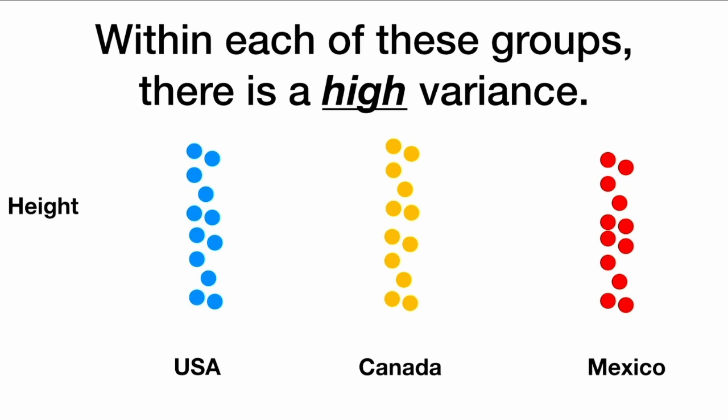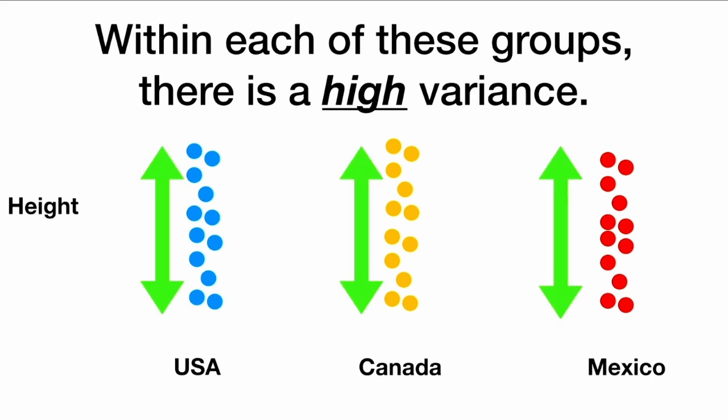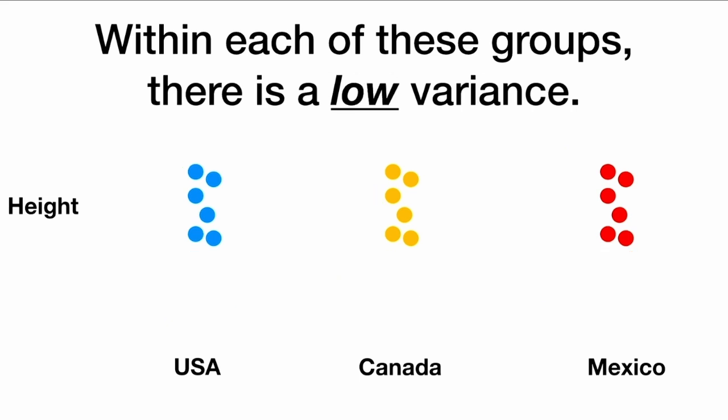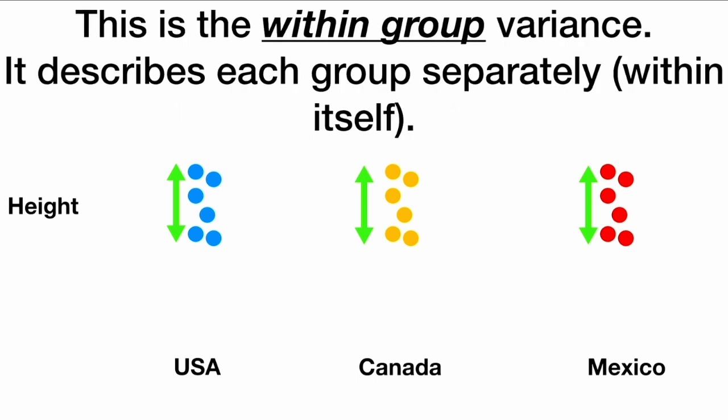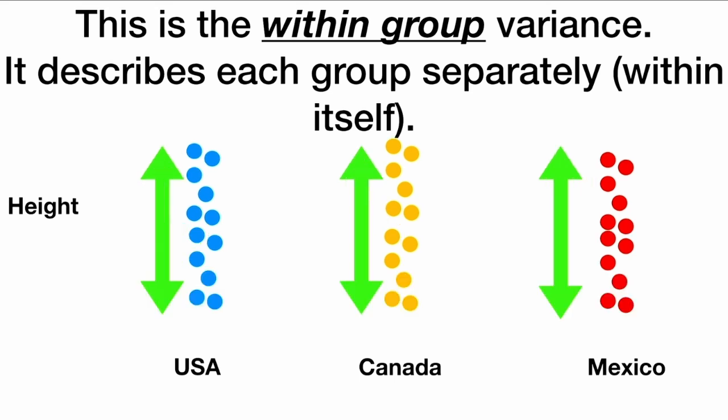Within each of these three groups — the U.S., Canada, and Mexico — there can be high variance. We see within each group they all have a lot of variability. In contrast, with this other set of data, there is low variance within each group — the heights of the people in each group are relatively close together. This is the within-group variance; it describes each group separately within itself.